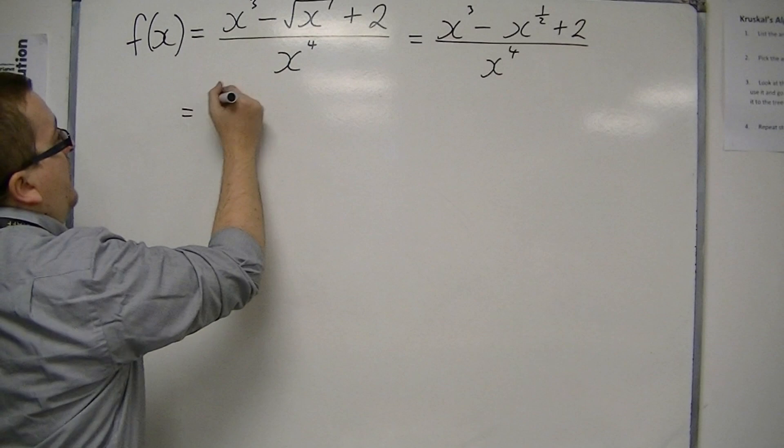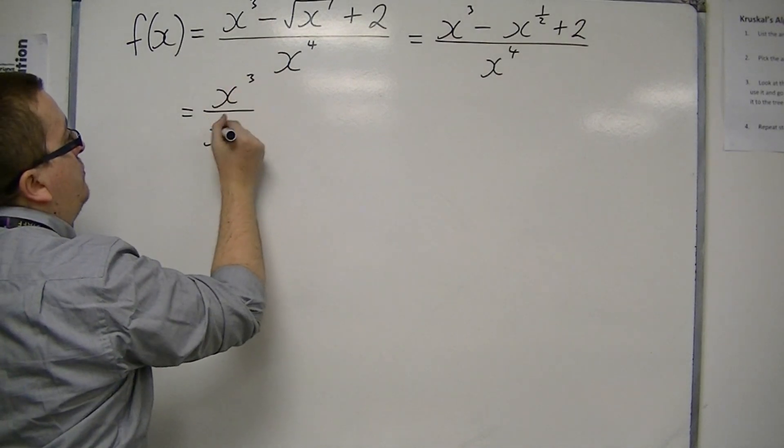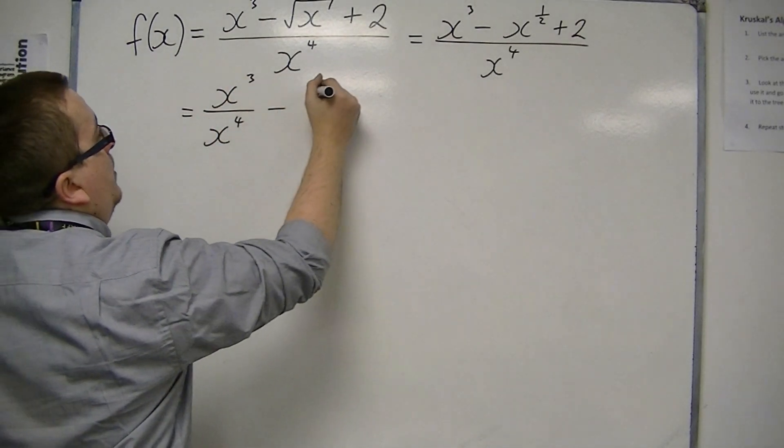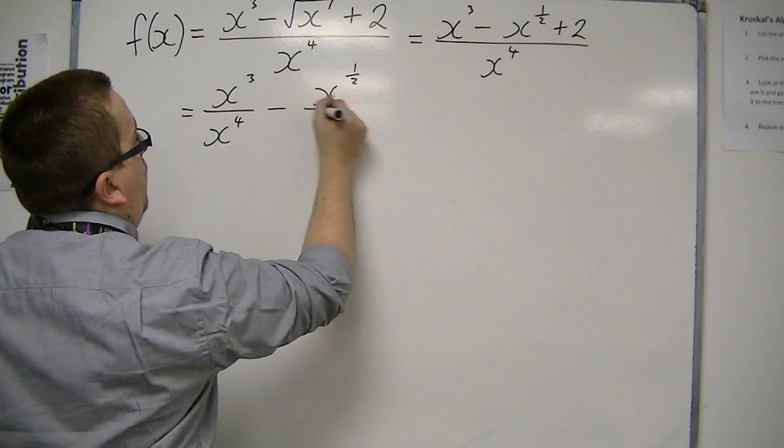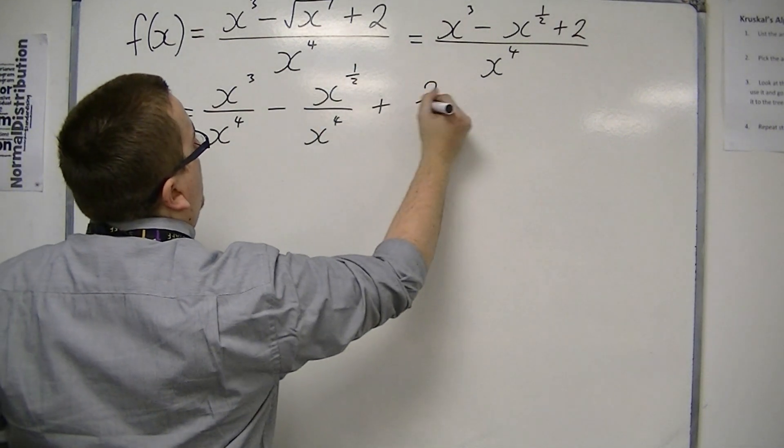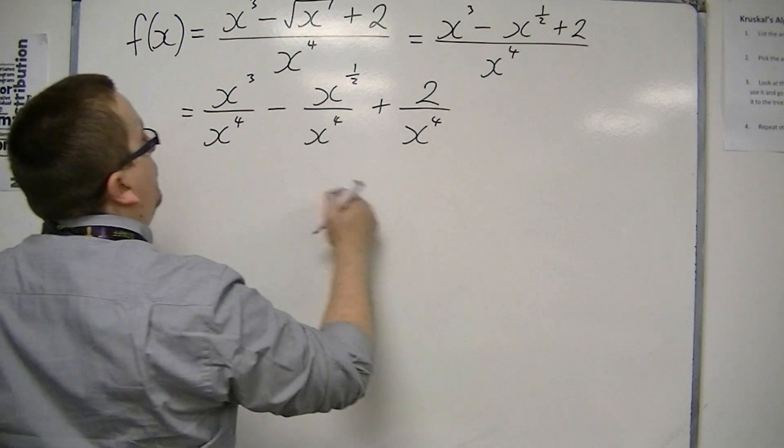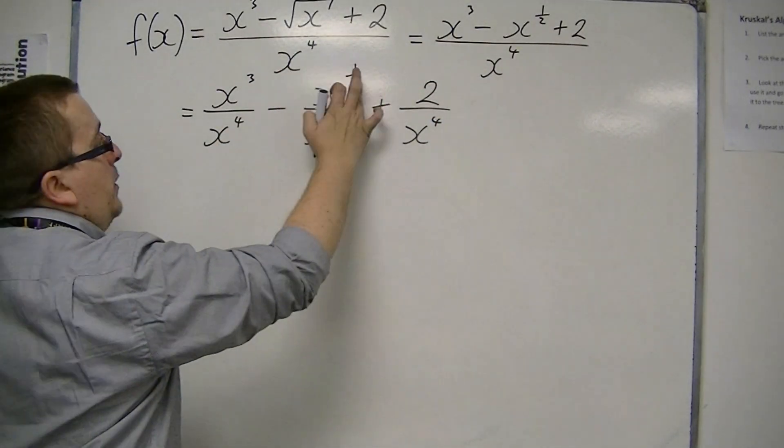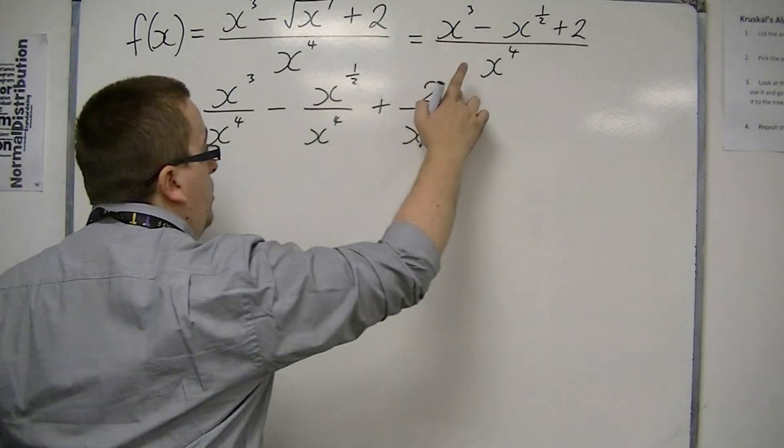Now we're going to split this up. This stage you don't really need to write, but I'm just doing it to highlight what we're going to do next. I'm splitting the fraction up. So I've got x cubed over x to the 4 take away x to the half over x to the 4 plus 2 over x to the 4.